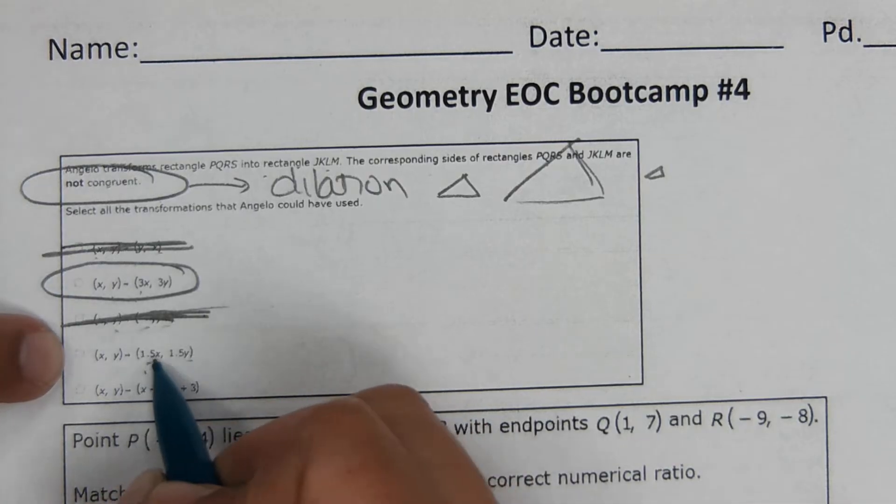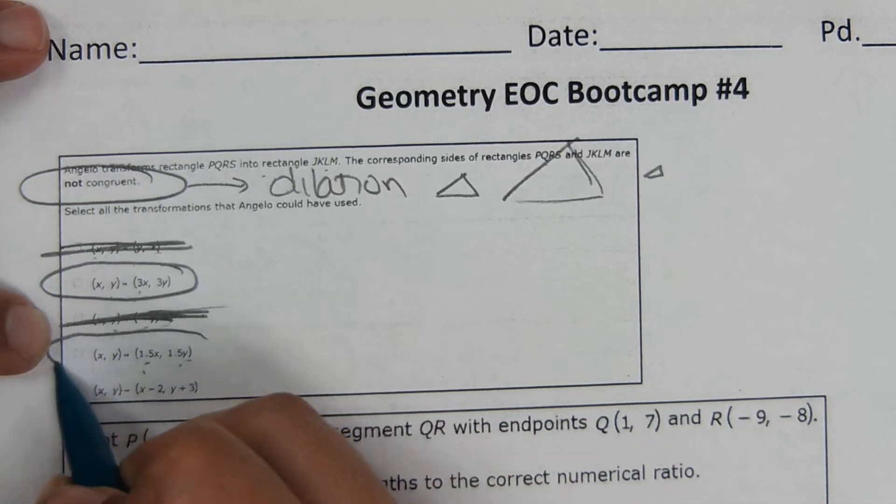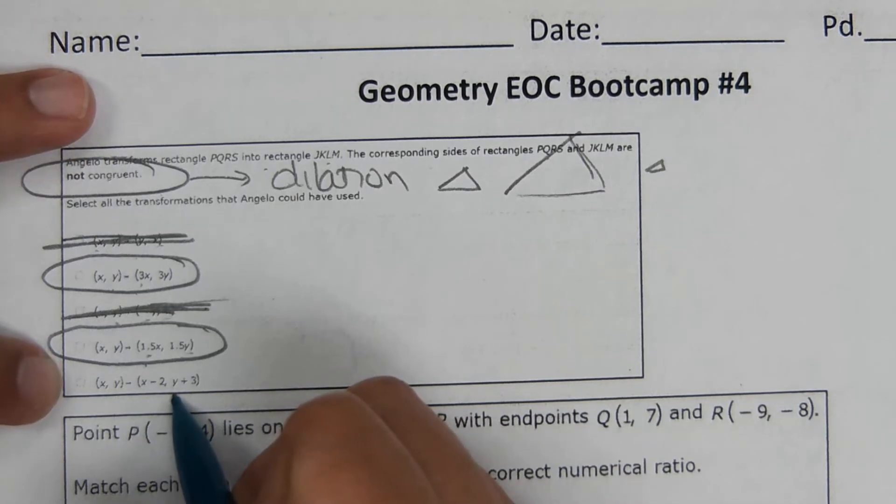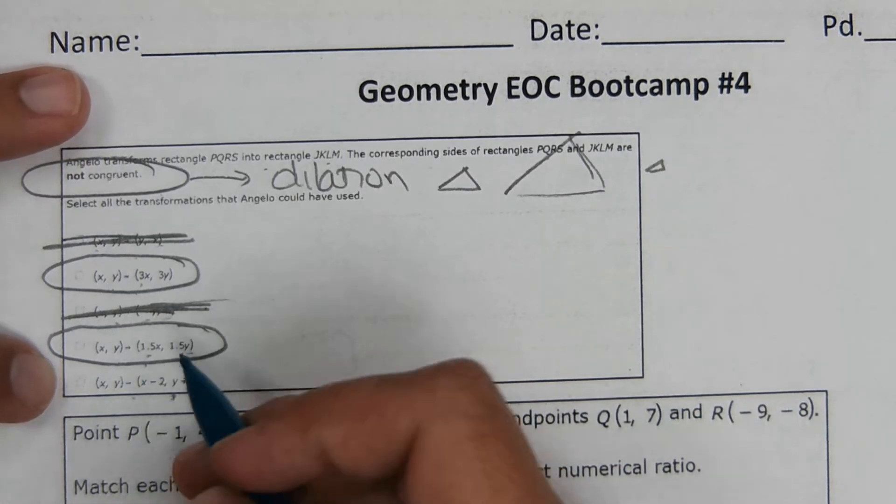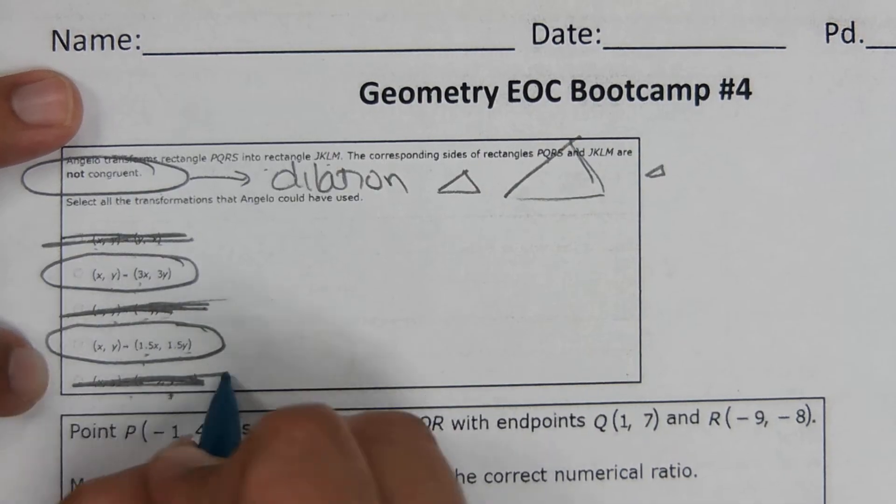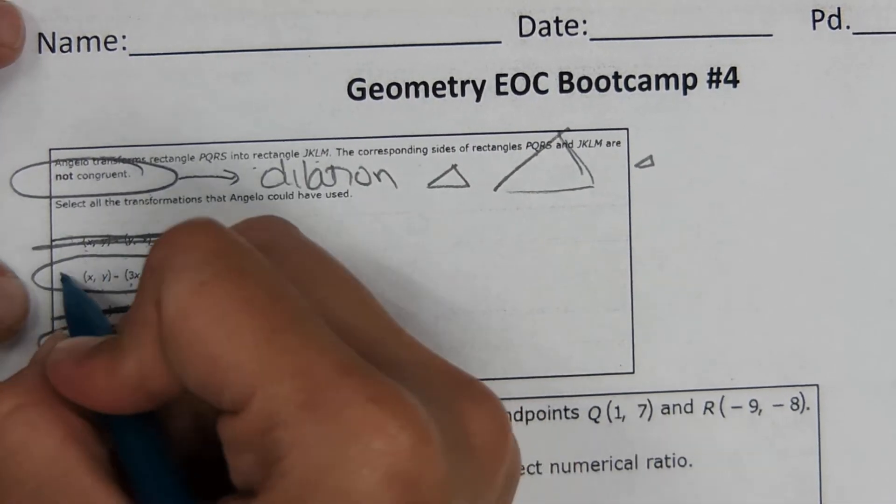This one, they're multiplying by scale factor 1.5. So it is growing or shrinking. This one, it's just changing location. It's going left two up three, but it's not changing shape or size. So these are the two correct answers.